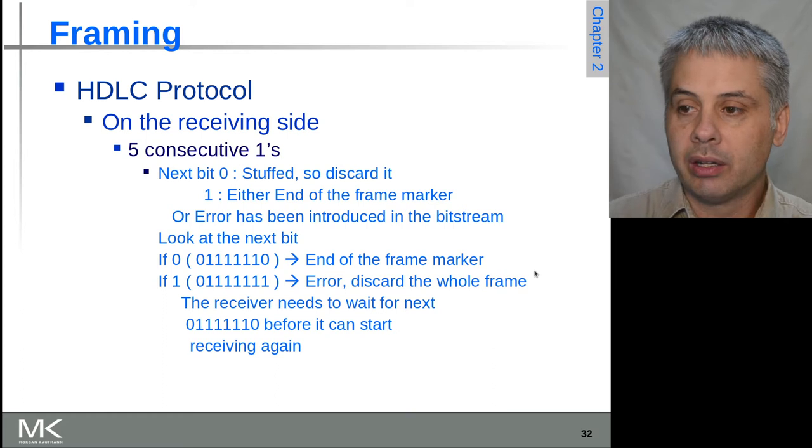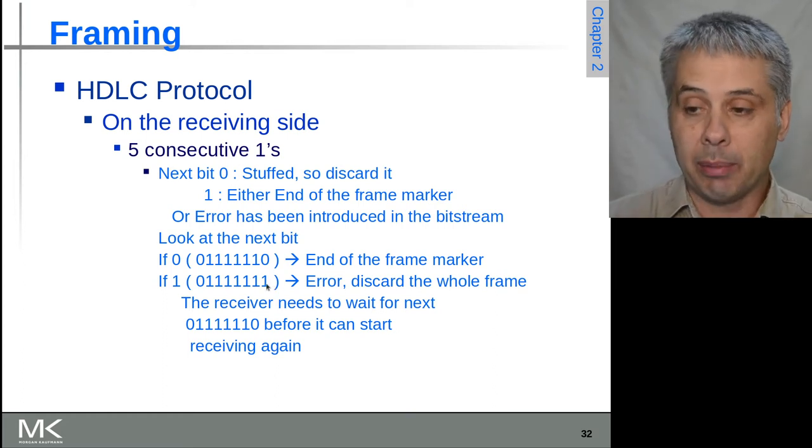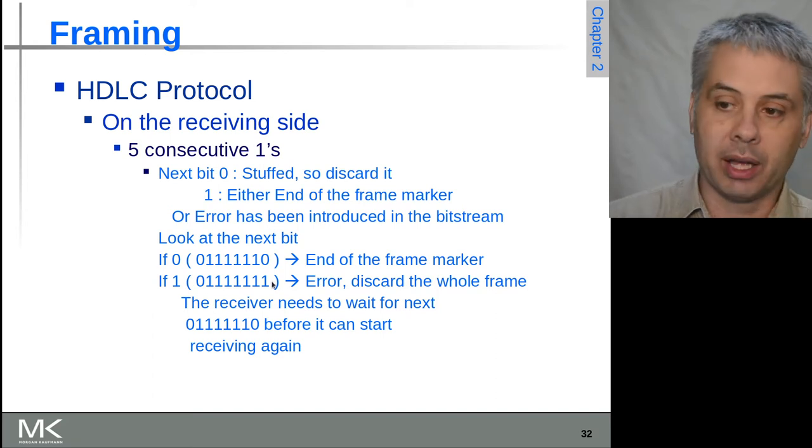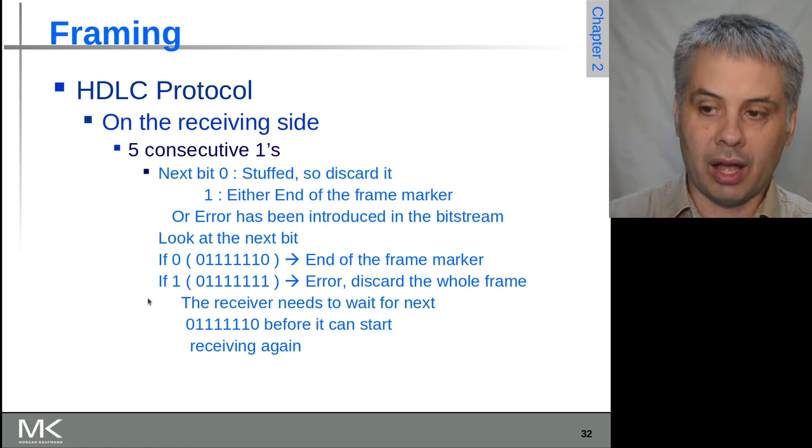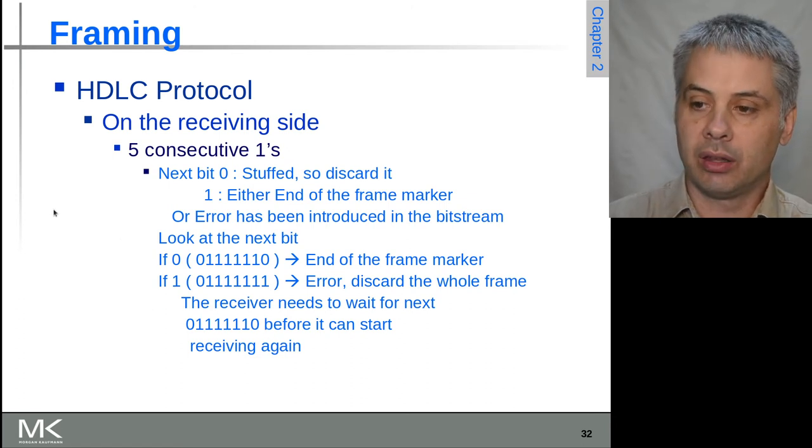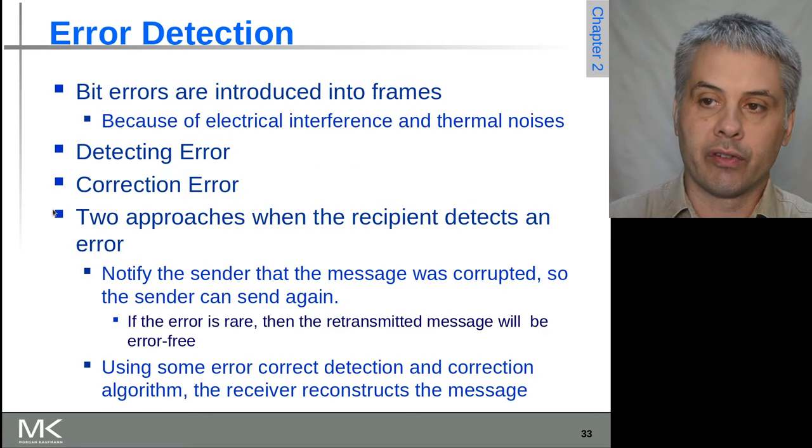If it's a one, then it's an error. We had seven bits in a row, which should never happen, and there's some kind of framing error. The receiver needs to start again looking for the sequence of six ones.